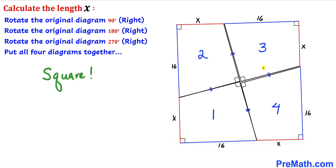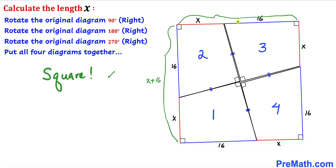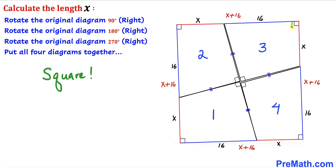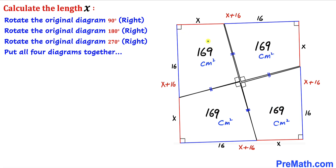This combined diagram represents a square, since this side length is x plus 16, likewise this side length is x plus 16 as well, likewise this one is the same x plus 16, and finally this side length is x plus 16. Moreover, these corner angles are all 90 degrees each.